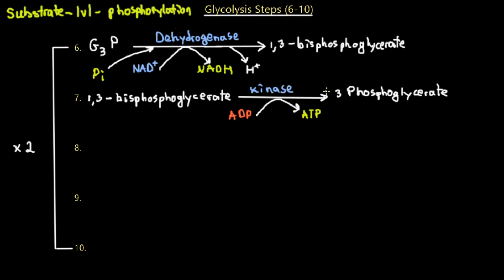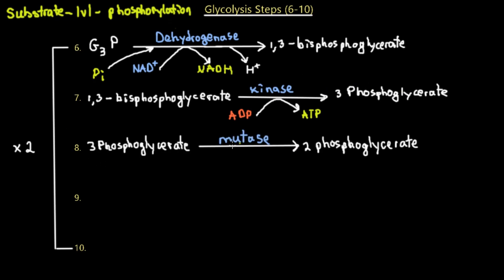Step eight: 3-phosphoglycerate undergoes a mutase reaction, where a chemical group is shifted within the same molecule. The phosphate at carbon three of glycerate is shifted to carbon two, producing 2-phosphoglycerate. Mutases are known for these isomerization reactions — they shift a functional group from one position to another within the same molecule.